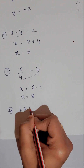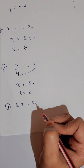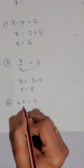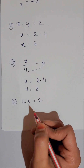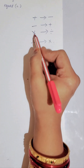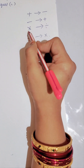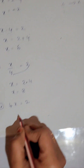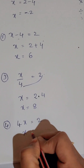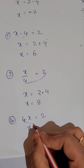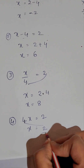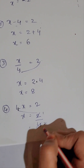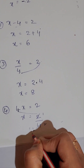Next: 4x = 2. Here 4 is in multiplication. If this multiplication moves from the left hand side to the right hand side, it becomes division. So x = 2 ÷ 4, which is 1/2. The x value is 1/2.